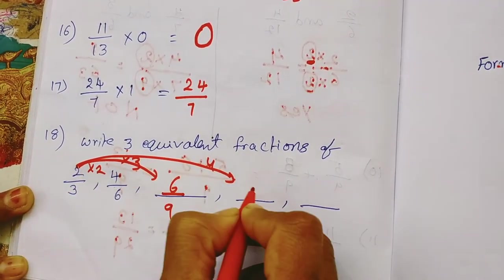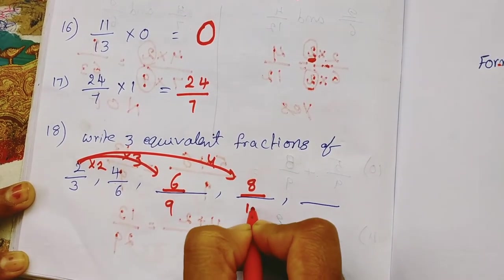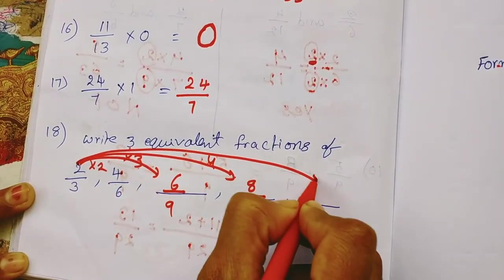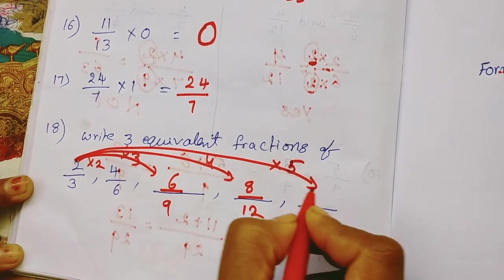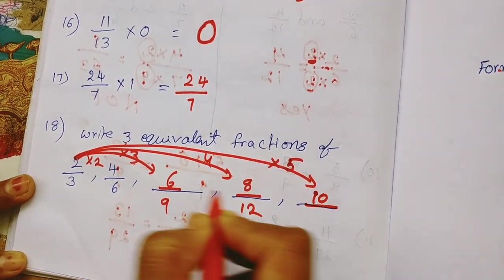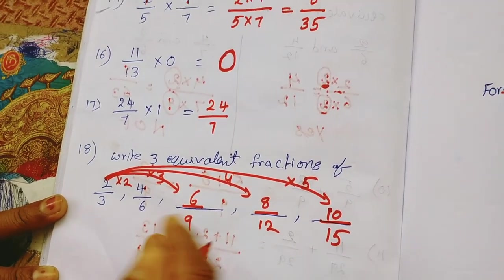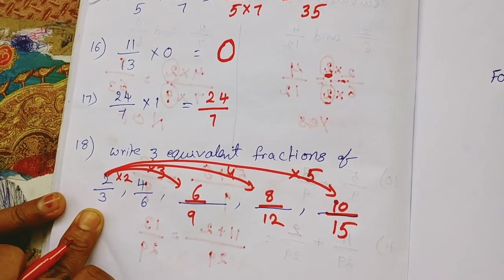Again 2 by 3 into 4, 2 times 4 are 8 by 3 times 4 are 12. Again 2 by 3 into 5, 2 times 5 are 10 by 3 times 5 are 15. So these are 3 next equivalent fractions of 2 by 3.